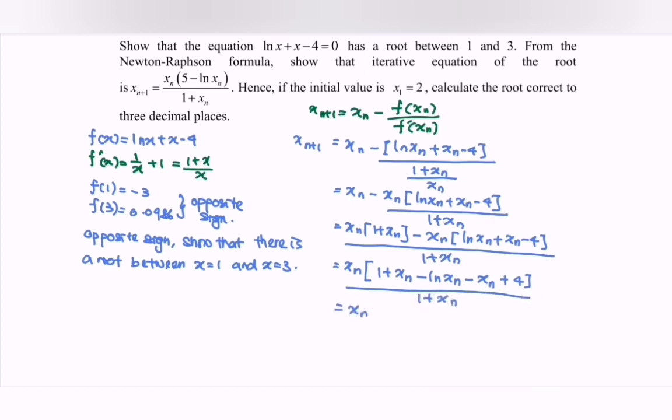Notice that the x_n terms cancel, leaving x_{n+1} = x_n[5 - ln x_n]/(1 + x_n). This is our iterative equation.